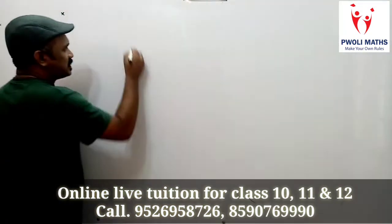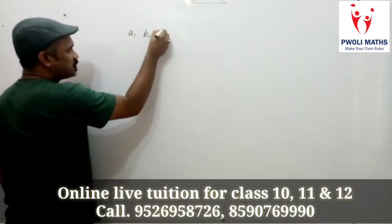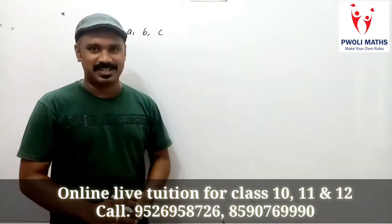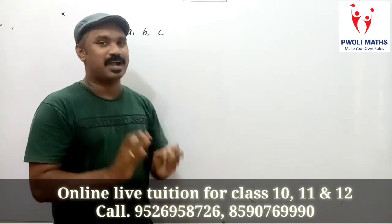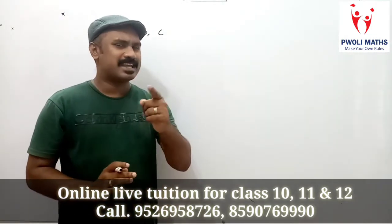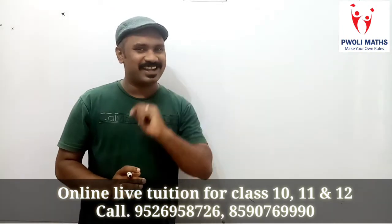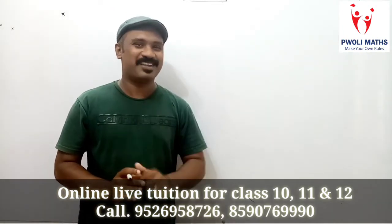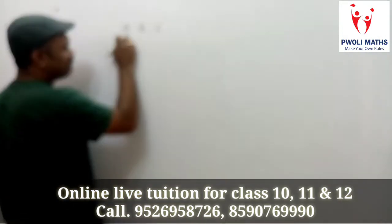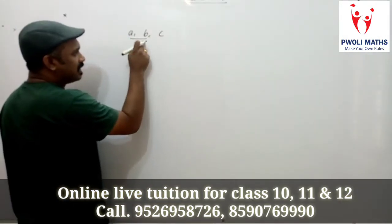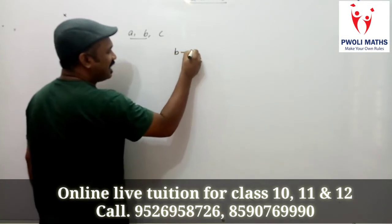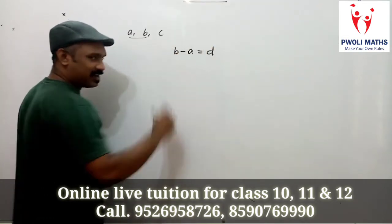Let A, B and C be three consecutive terms of an arithmetic progression. The common difference between the first and second terms is B minus A, and that is equal to the common difference D.